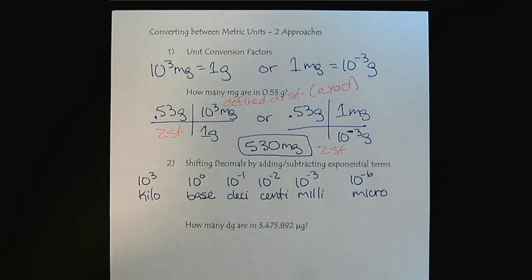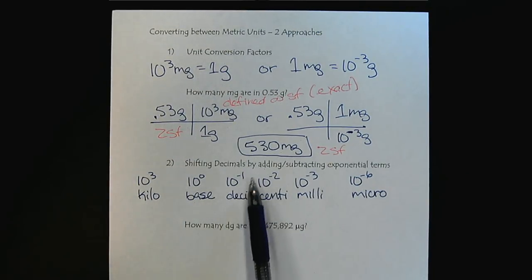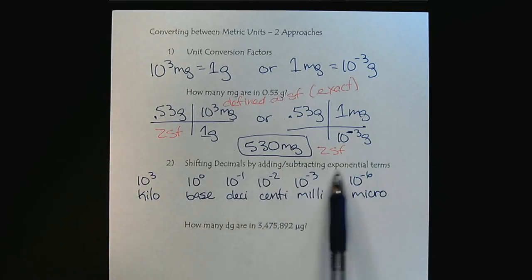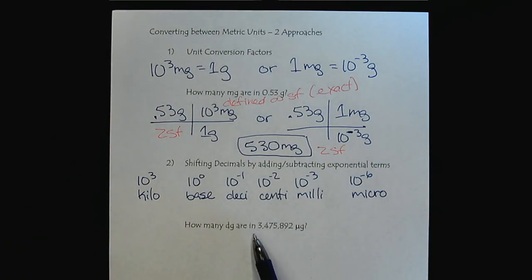So now we can take advantage of the fact that we can shift the decimal by adding or subtracting the exponential terms. So let me give you, let's do some examples. So let me show you how this works.